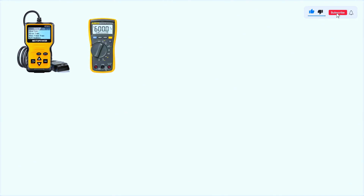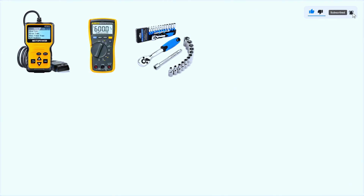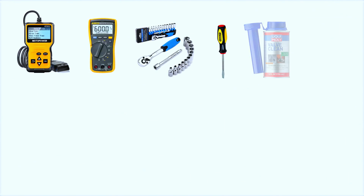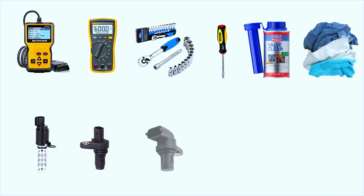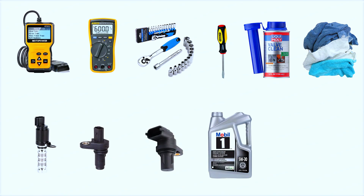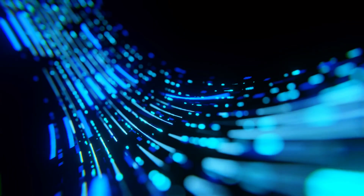Here's what you'll need: an OBD2 scanner, a multimeter, a wrench set or socket set, a screwdriver, brake cleaner or electrical contact cleaner, rags or a clean cloth, a replacement camshaft position actuator, a replacement crankshaft or camshaft position sensor, engine oil, and work gloves.